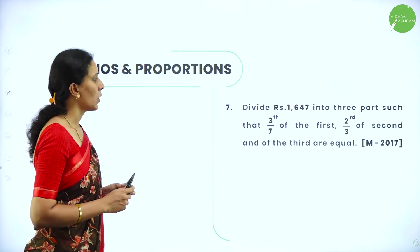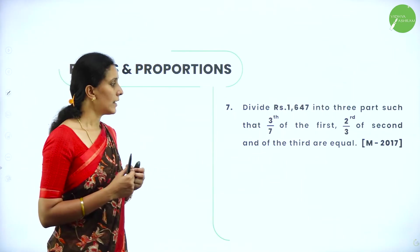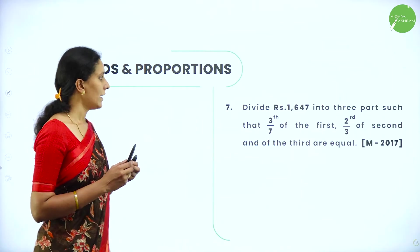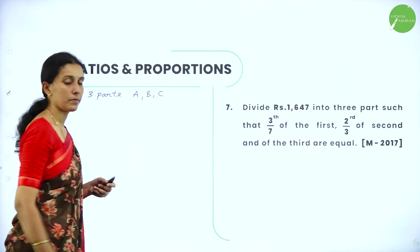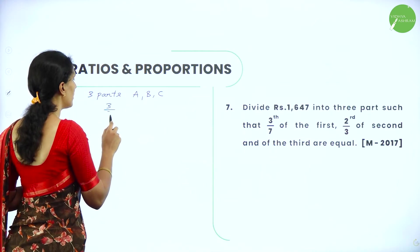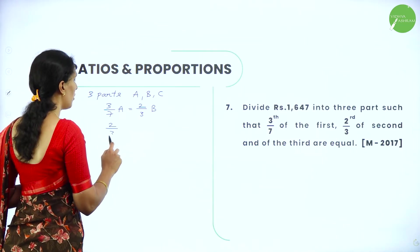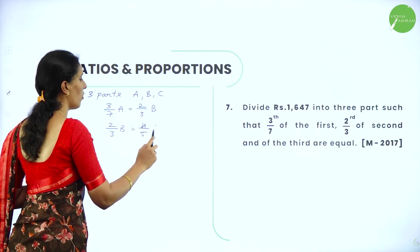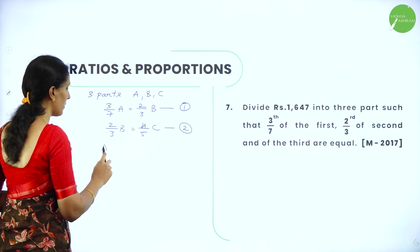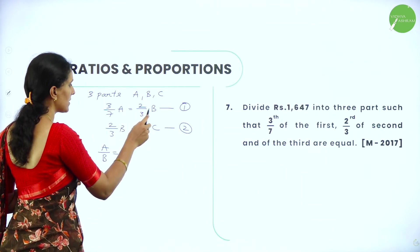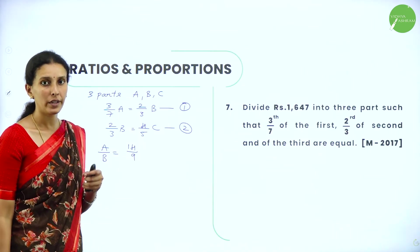Next: Divide rupees 1647 into 3 parts such that 3 by 7th of the first, 2 by 3rd of the second, and 4 by 5th of the third are equal. Let the 3 parts be A, B, and C. Given: 3 by 7 of A equals 2 by 3 of B (equation 1), and 2 by 3 of B equals 4 by 5 of C (equation 2). For A by B: we get 14 divided by 9, so A is to B equals 14 is to 9.